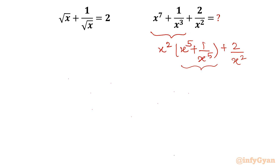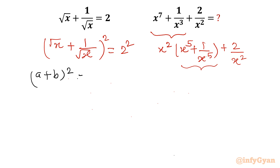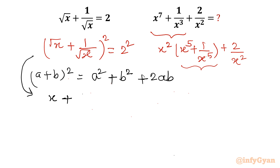The given equation is square root x plus 1 over square root x equals 2. Let me square both sides. I will write square root x plus 1 over square root x, whole square, equals 2 squared. Using the identity a plus b whole square equals a squared plus b squared plus 2ab, expanding gives x plus 1 over x plus 2 times square root x times 1 over square root x on the left-hand side.